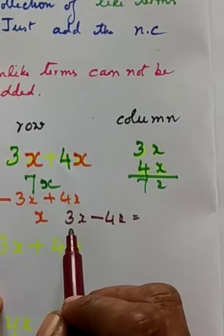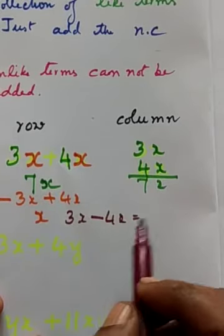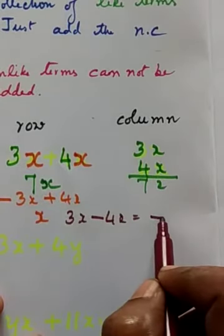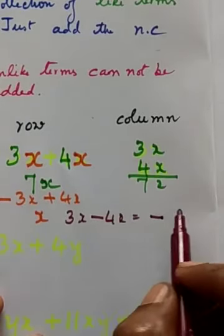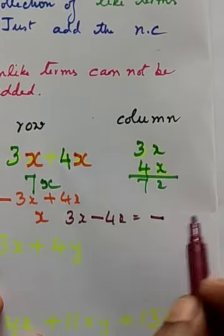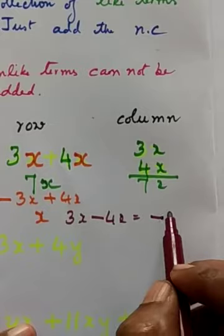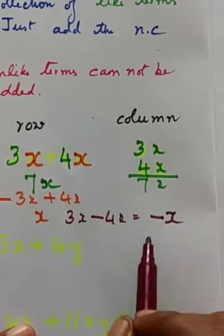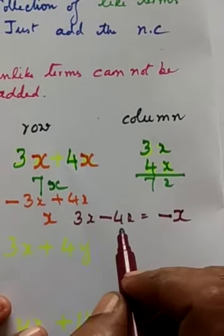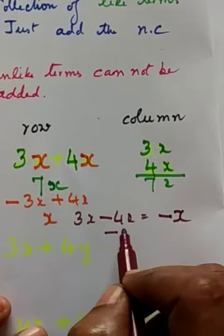Put the bigger number sign, that is minus. 4 minus 3, that is 1. 1 you need not write. You already know, isn't it?